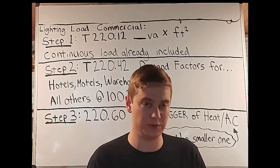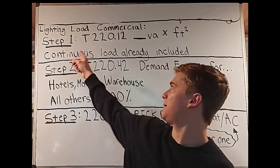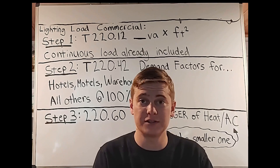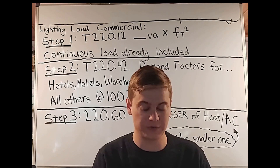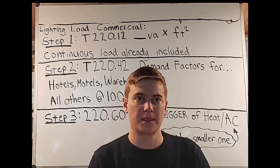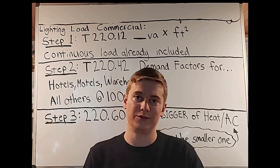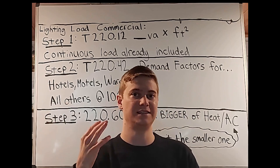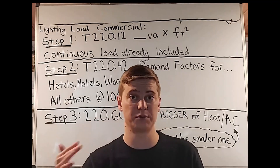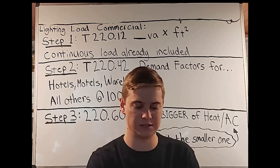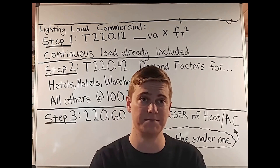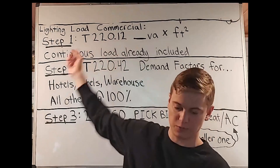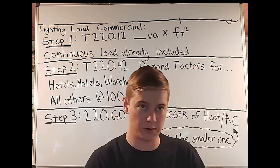This table is what you're going to use for step one of the commercial load calculation. Under the table there's a 125% multiplier for continuous load. When dealing with continuous loads in commercial occupancies, we need that additional 125%. The good news is that using this table already has that math built in — the continuous load is already included in table 220.12 when you're using the volt amperes per square foot.